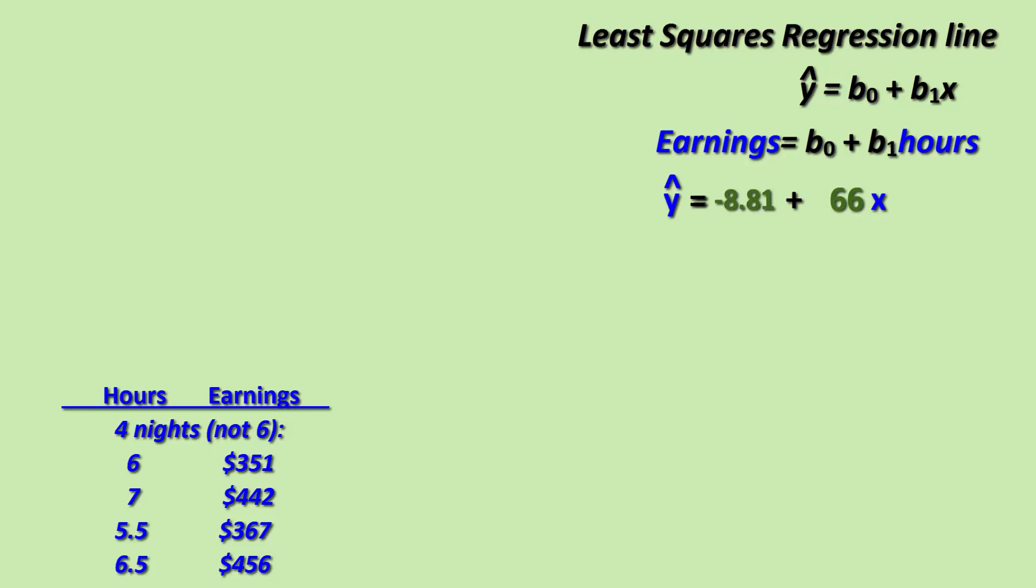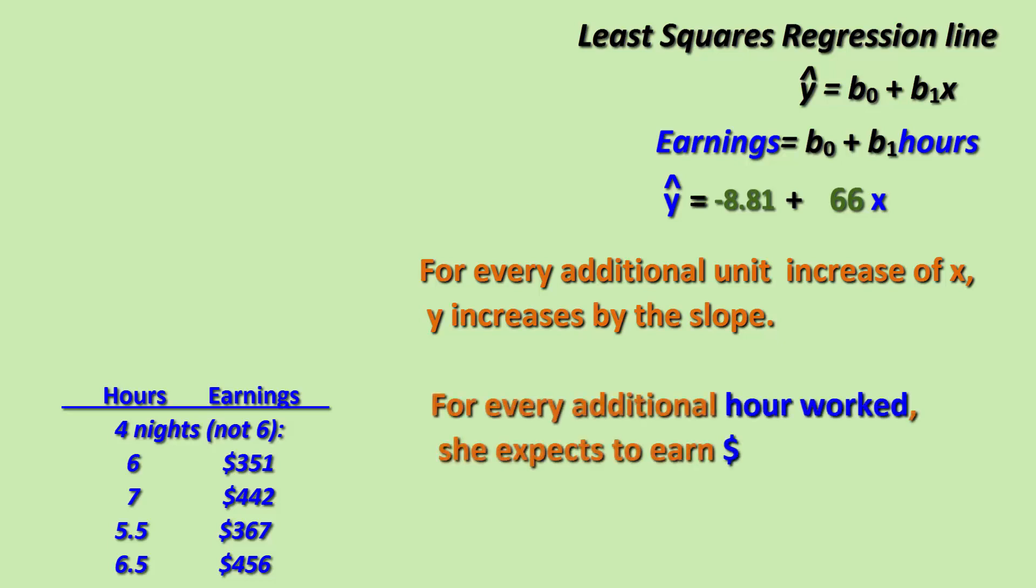In practicing how to interpret slope in the way AP prefers, we should say that for every additional unit increase in X, Y increases by the slope. So in this case, for every additional hour of work for Megan, she expects to earn sixty-six dollars.